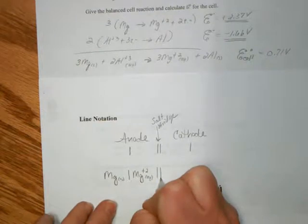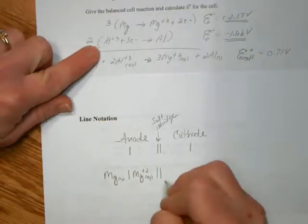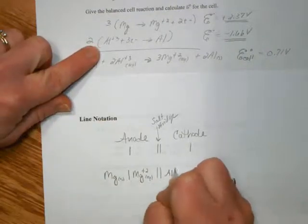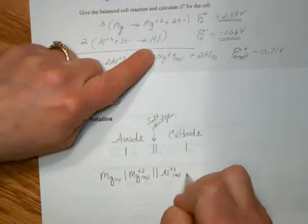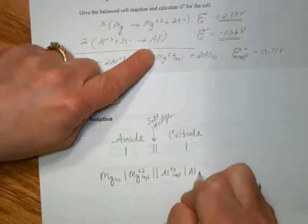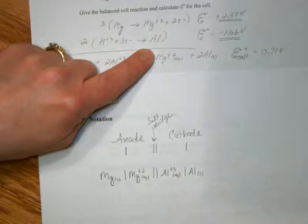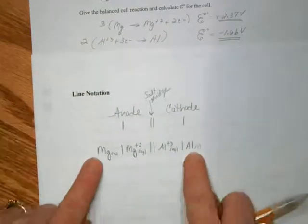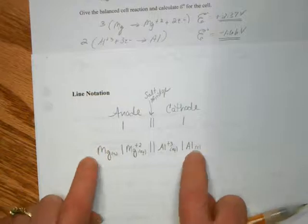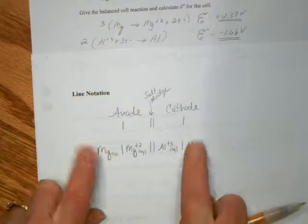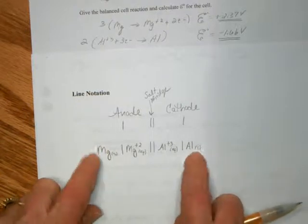Salt bridge, then to our cathode. We have the aluminum ion, and then aluminum solid as the electrode. You usually have your solid on the outermost ends. So we're going from electrode, solid state, inward.